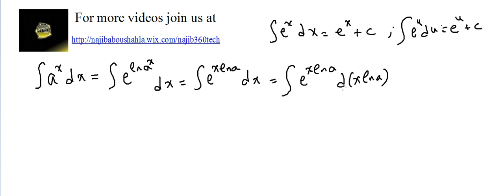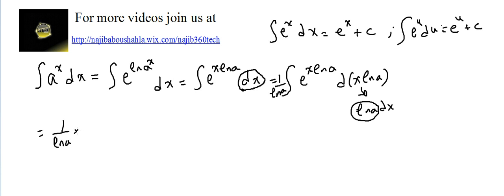This is u. When we compute d(x·ln a), ln a is a constant number, so the derivative of x·ln a is ln a · dx. To get rid of this ln a, we divide by ln a, so the answer is 1 over ln a times e^u du. Since e^u du = e^u plus c, we get e^(x·ln a) plus c. And since e^(x·ln a) is a^x, the final answer is a^x divided by ln a plus c.